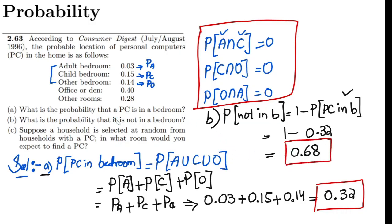Similarly, for part (c) we have to suppose a household is selected at random from the households with a PC. In what room would you expect to find a PC? We have the overall data which is basically given in the form of this table and these are all the probabilities of the availability of a PC in certain rooms.